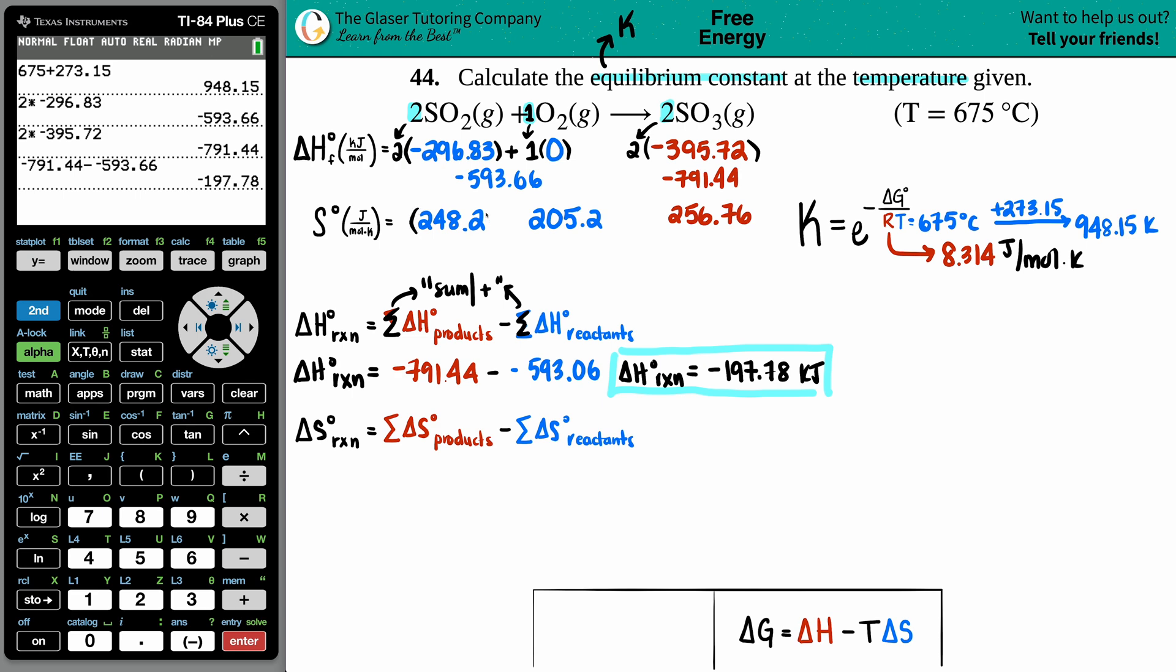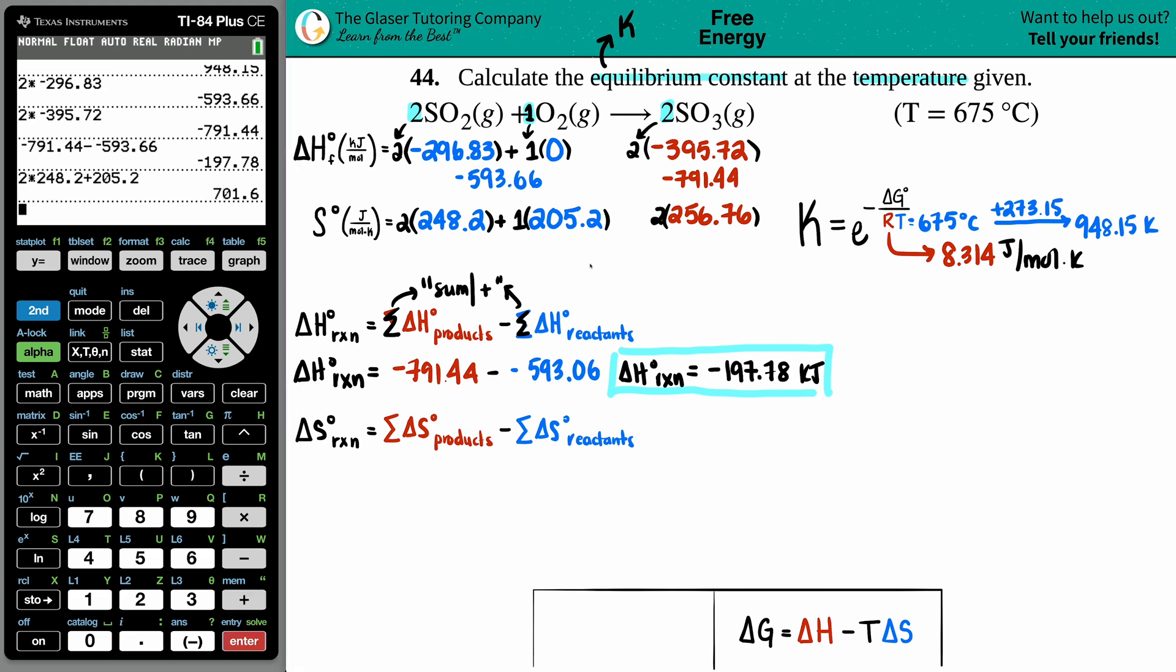I take the S values and multiply them by the coefficients: multiply by 2, by 1, and by 2. Sum them up - I have two reactants, so I add them. Let's see: 2 times 248.2 plus 205.2 gives 701.6 total for the reactant side. Now the products: 2 times 256.76 gives 513.52.